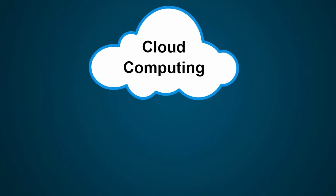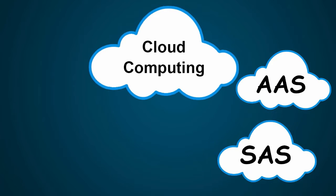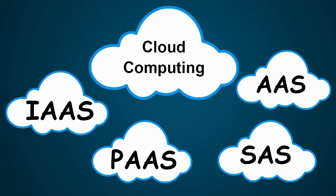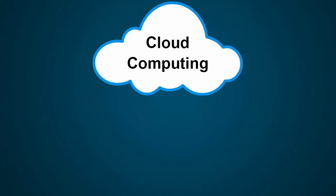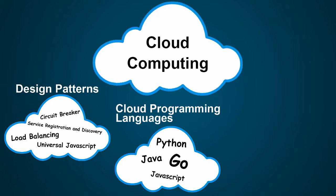Each of these providers supports a specific architectural model. For example, Amazon Web Services supports Infrastructure as a Service, whereas Heroku supports Software as a Service. Google Cloud supports Platform as a Service, and Microsoft Azure supports all the architectures.